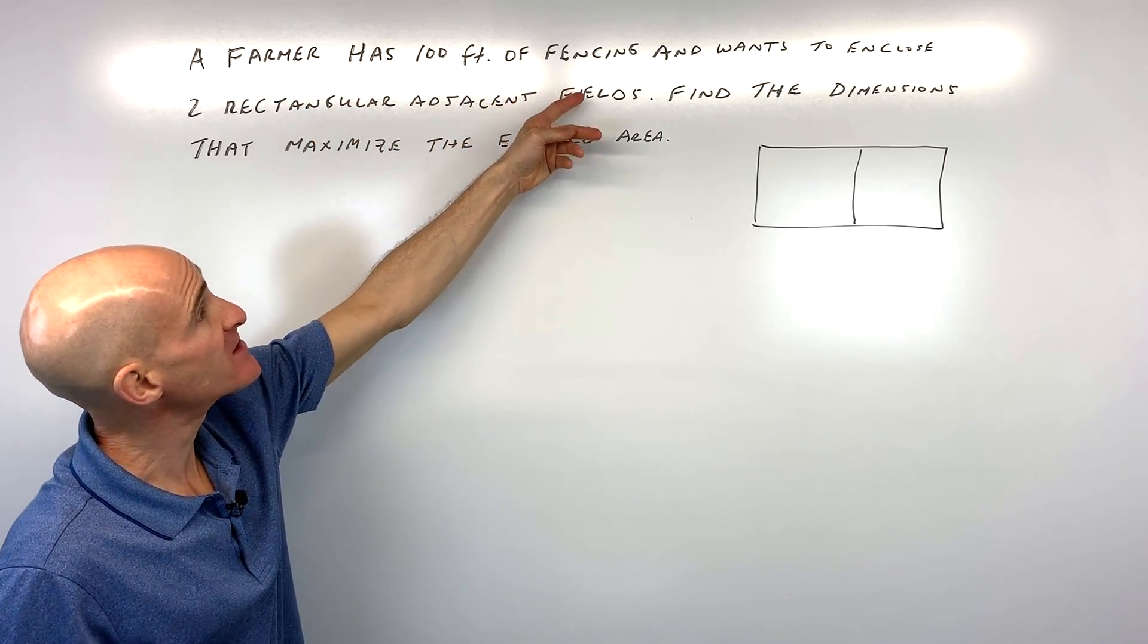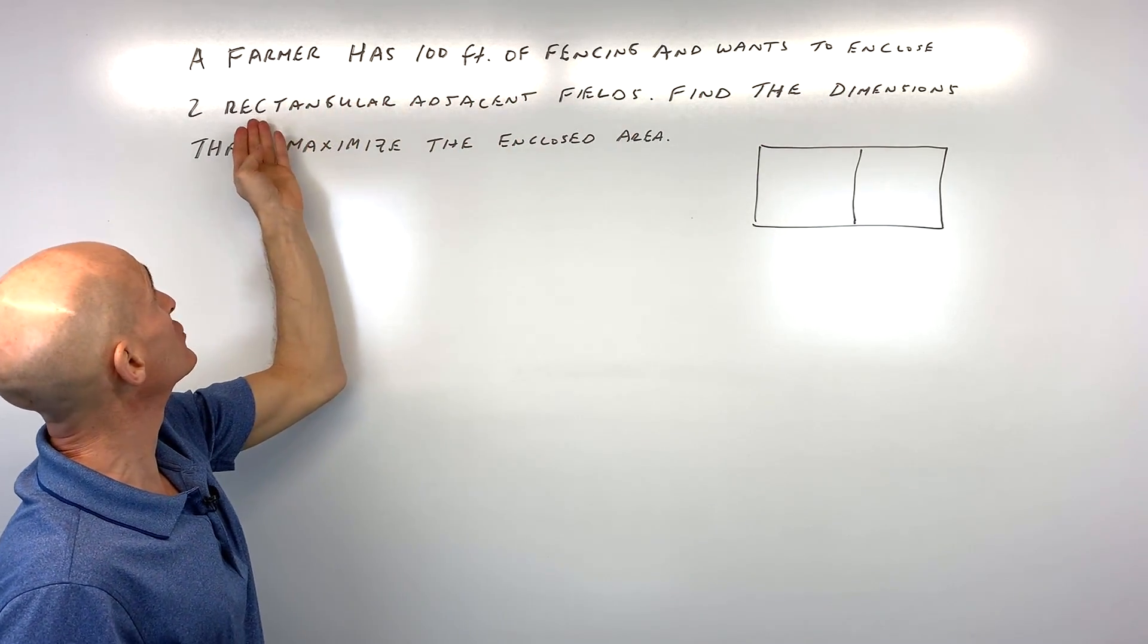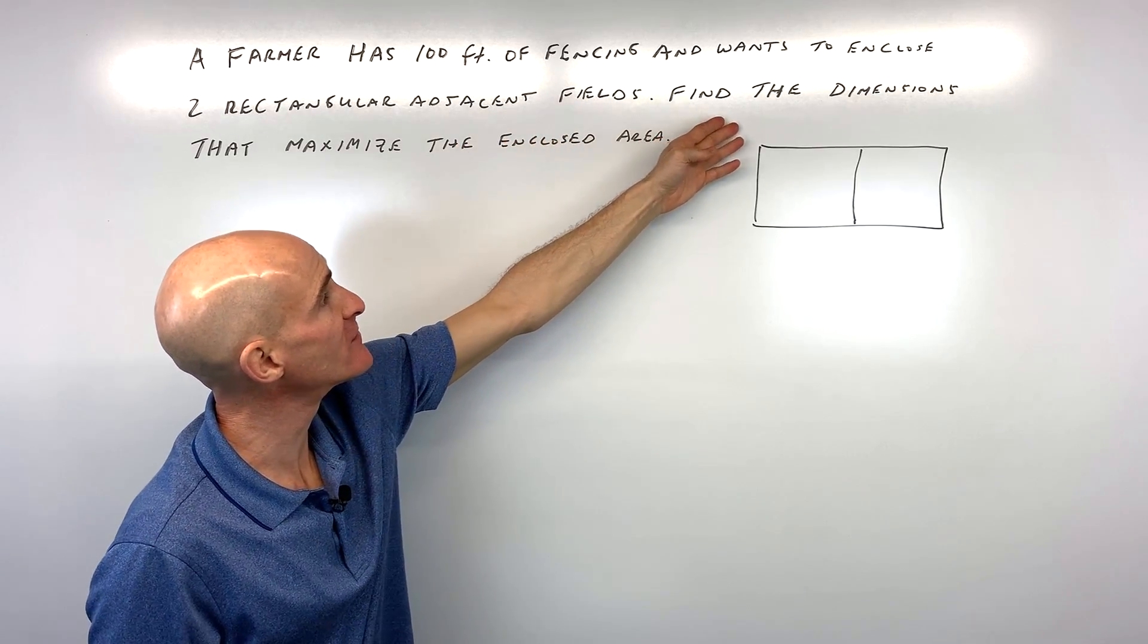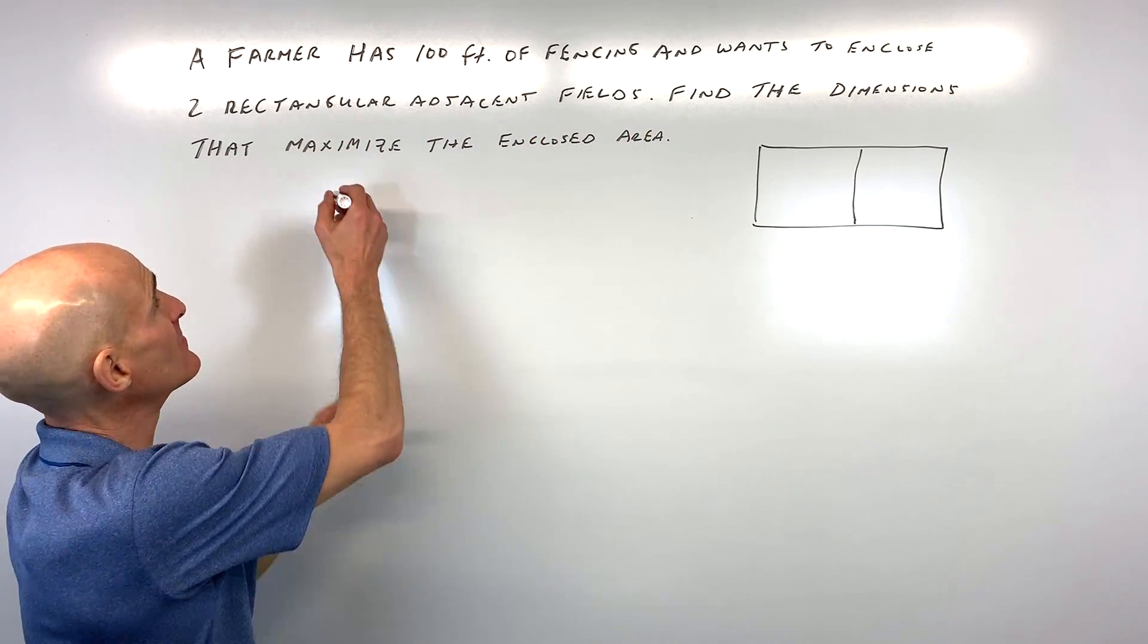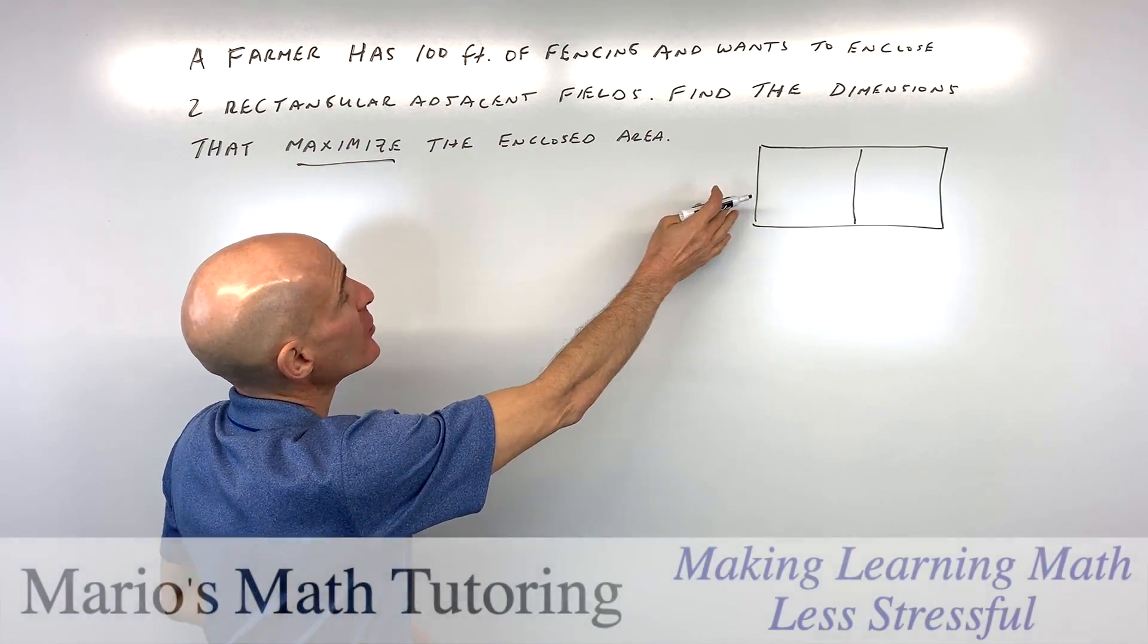A farmer has 100 feet of fencing and wants to enclose two rectangular adjacent fields. Find the dimensions that maximize the enclosed area.